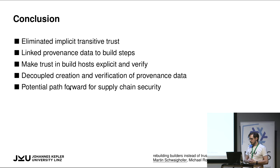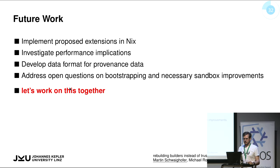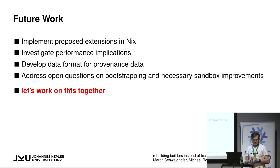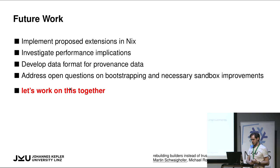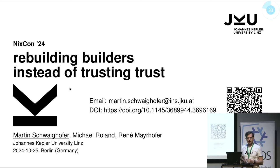We link provenance data with our build steps and make the software state of build hosts explicit and verifiable, decoupling generation of provenance data from its verification. There are implementation challenges: performance implications since every link in the dependency graph becomes another subgraph, the need for a data format, bootstrapping the system, and strengthening Nix's sandbox. This isn't something an individual person can do alone — it would be great if the community could work towards this goal. That's my presentation. Thank you.